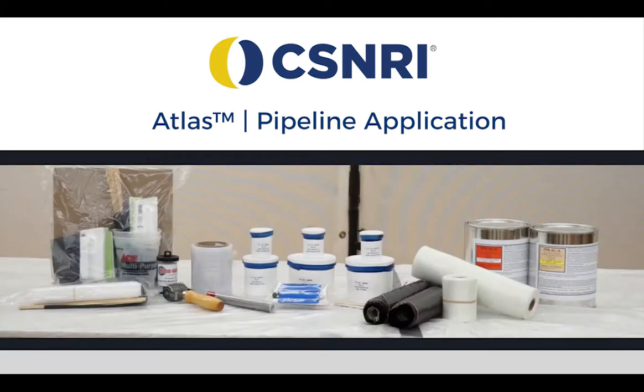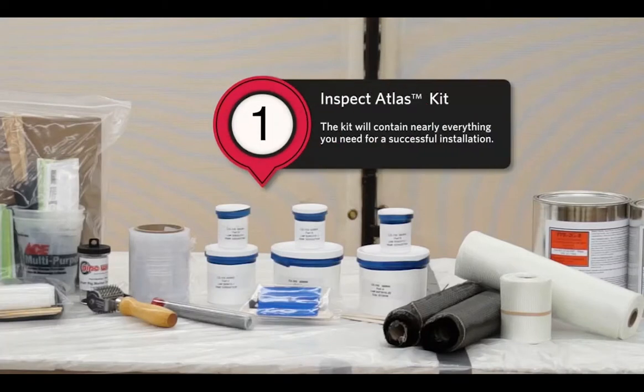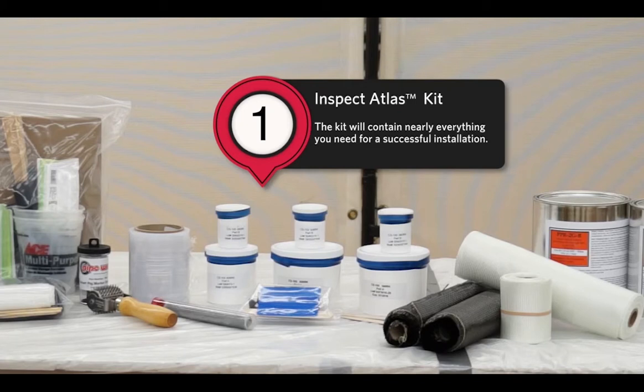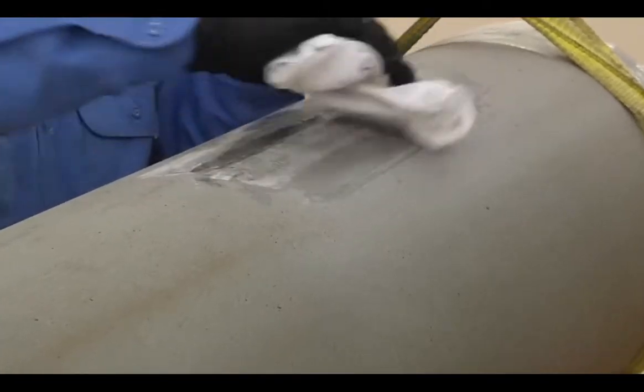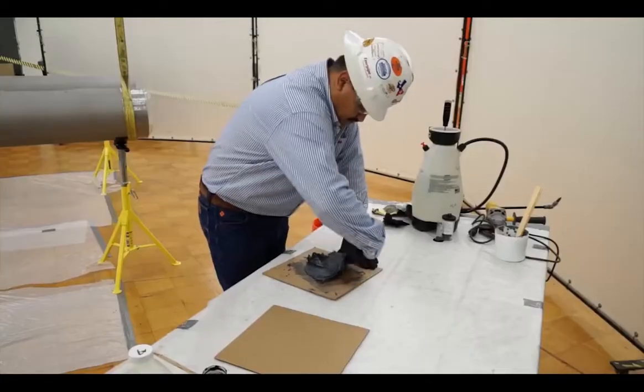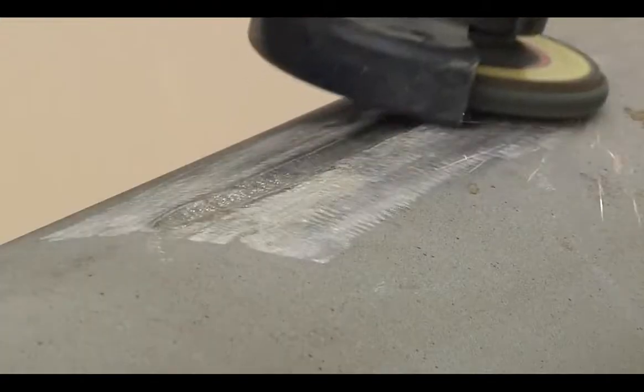When installing the Atlas system, it is critical to follow these steps. Inspect the contents of the Atlas kit. The kit will contain nearly everything you need for a successful installation. Other tools you may need on site include acetone, a transportable table, and surface prep tools.